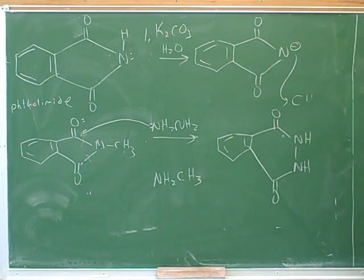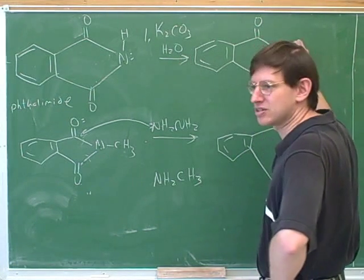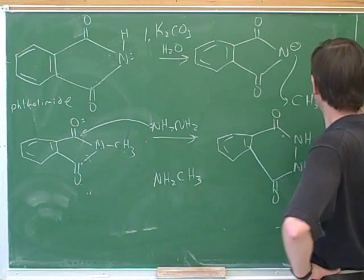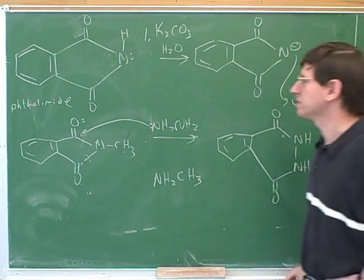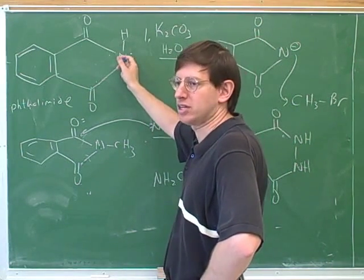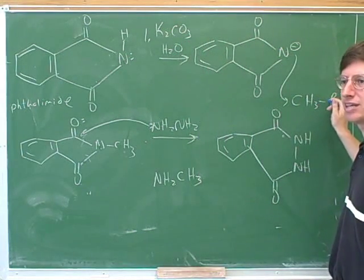But you still first add the base, right? That's right, because the base is what made this into the nucleophile that attacked this in the first place. So just to review the overall thing, first of all, we need to attach the alkyl group to the nitrogen. And in order to do that, we need base that makes the nitrogen into a nucleophile so we can do the SN2.